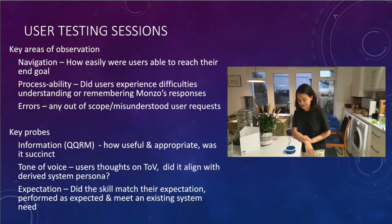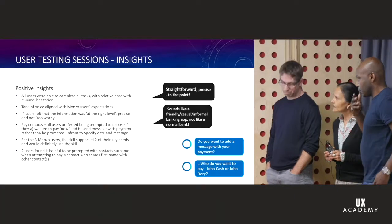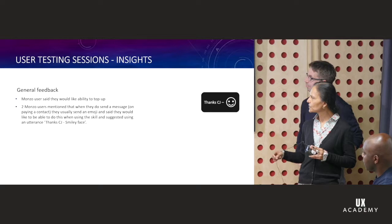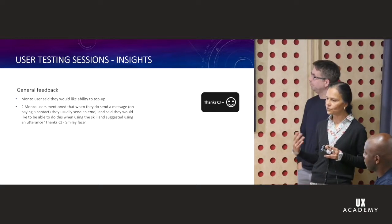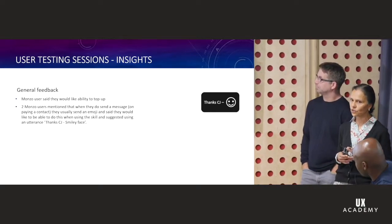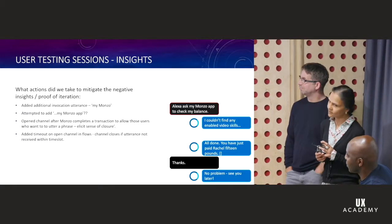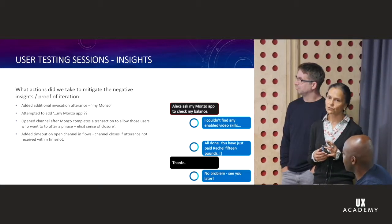Thanks to Zara, we wrote a discussion guide. Our key observation points were navigation, processability — is it useful, is it succinct enough and appropriate, is it relevant? Positive insights were that all users were able to complete the task. The tone of voice met Monzo users' expectations, and general feedback indicated three key features they use — top up would have been one they would like. We added additional invocation utterances.